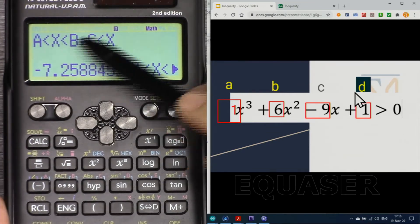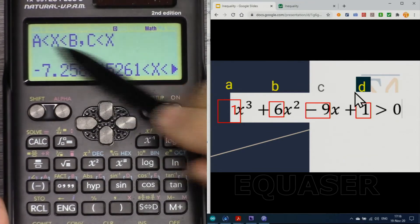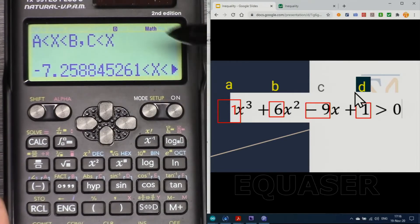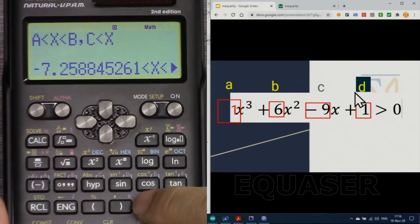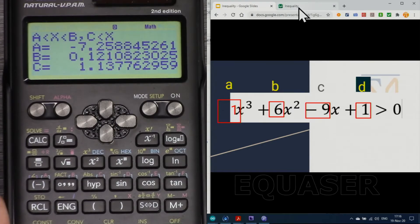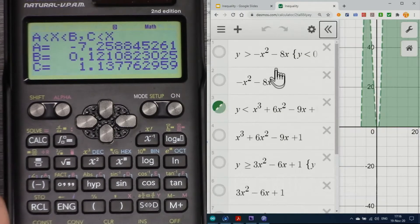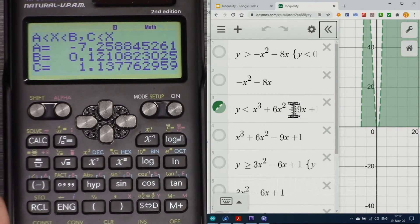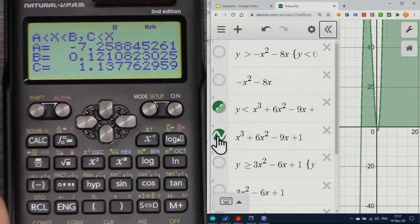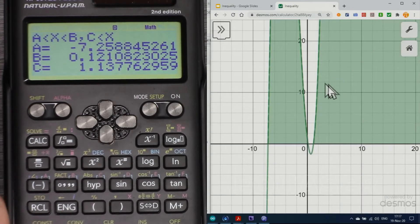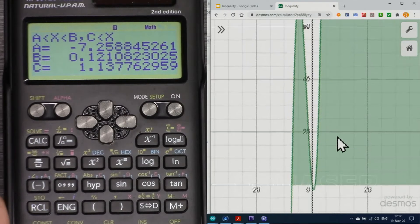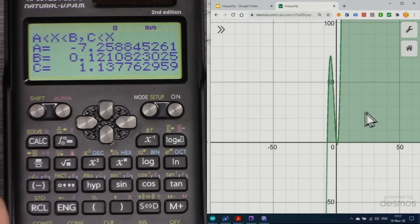And it says x is smaller than b, greater than a, and x is greater than c. But we have to see it by pressing this button. Now let's go to desmos.com and here is my function, and I'm activating it. So this is a function like that.